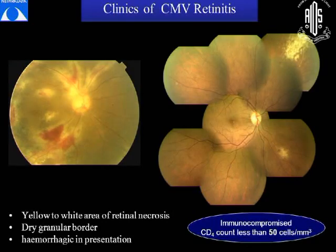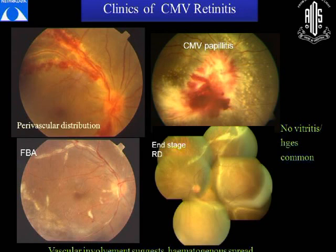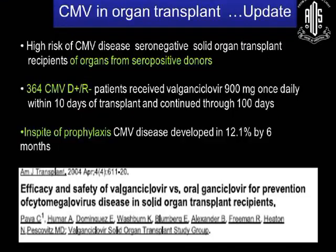Coming to the clinics of CMV retinitis, we usually see yellow to white areas of retinal necrosis with a dry granular border and a hemorrhagic presentation. Most of these patients are immunocompromised with CD4 counts of less than 50. The different types of CMV retinitis include perivascularitis, CMV papillitis, frosted branch angiitis with no vitritis, hemorrhages being common, and the end stage of untreated CMV retinitis with its sequelae.